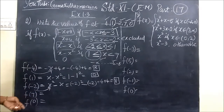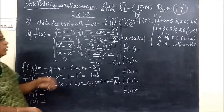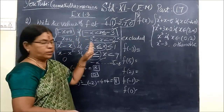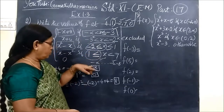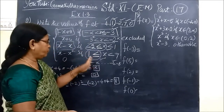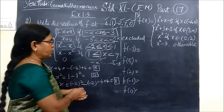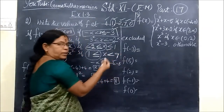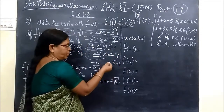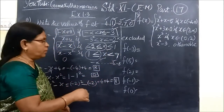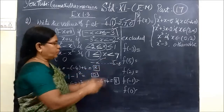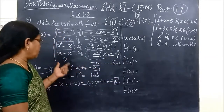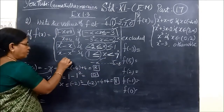Then f of 7. In the given intervals there is no 7. Because here this is given only less than 7. Less than 7 means up to 6 only you can write. 7 is excluded.